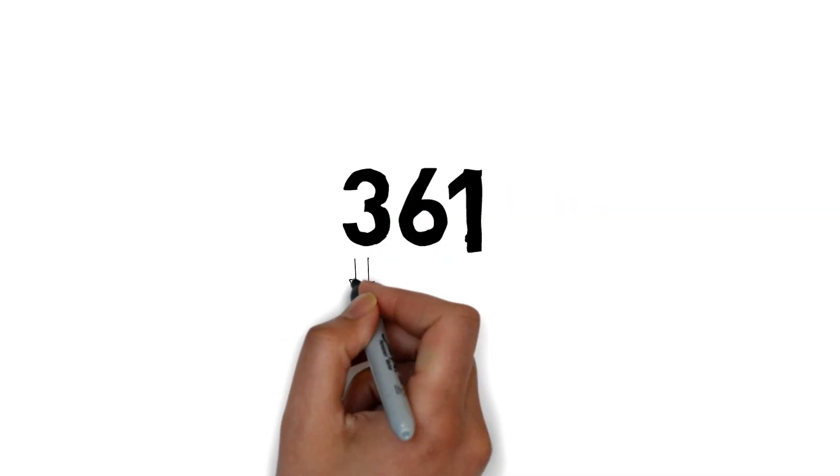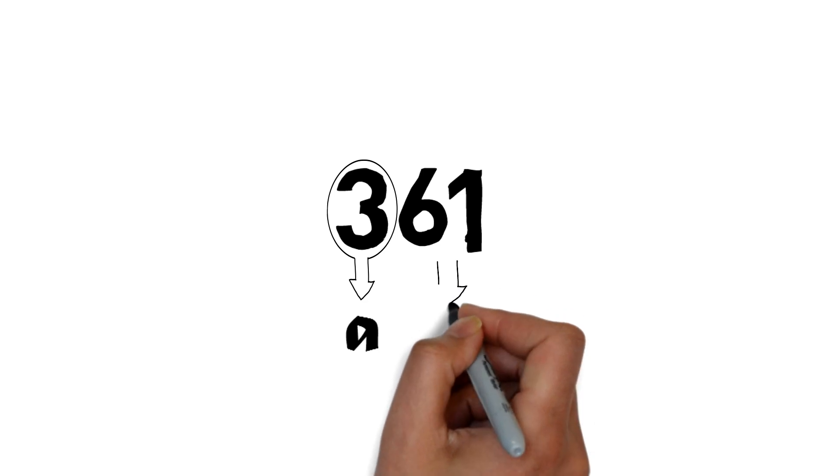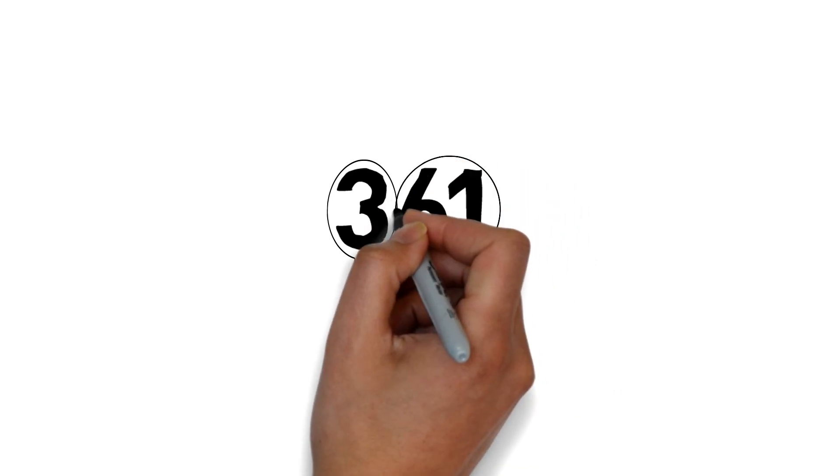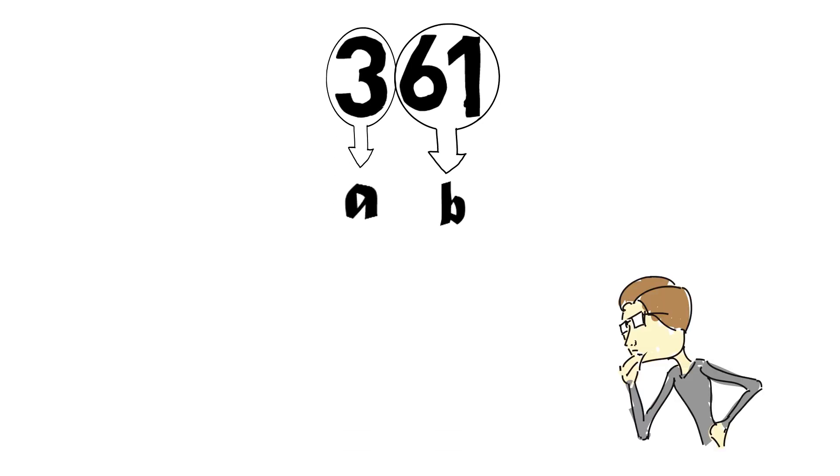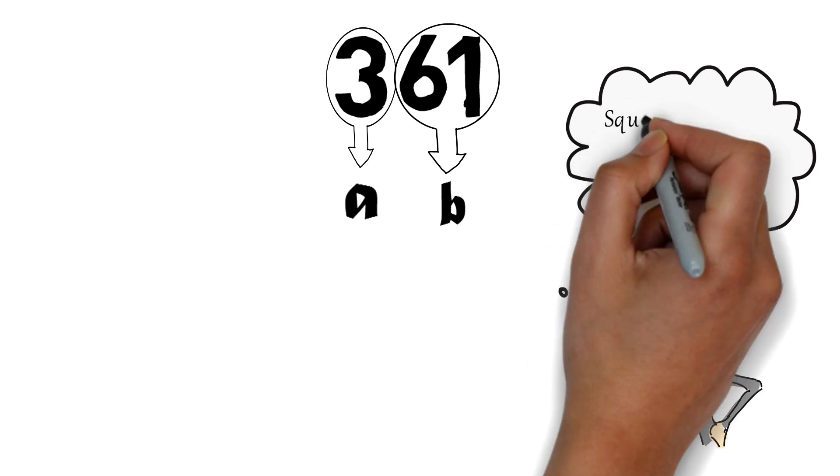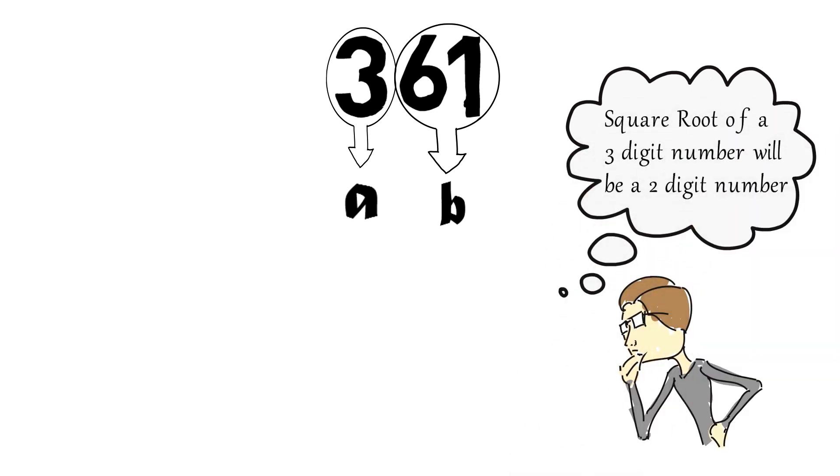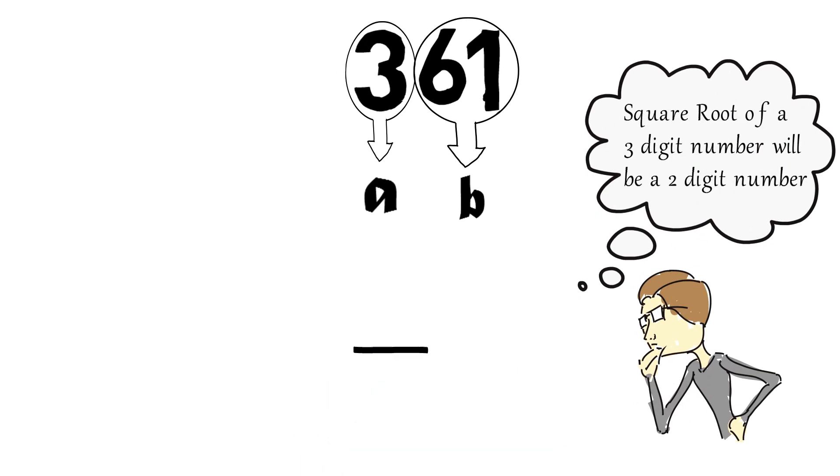Part a comprises the first digit, and part b comprises the second and third digits. The square root of a three-digit number is always a two-digit number, so it will have a digit at tens place and a digit at units place.